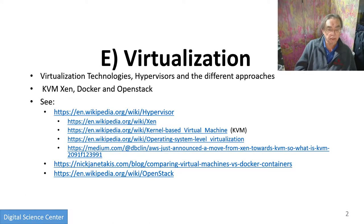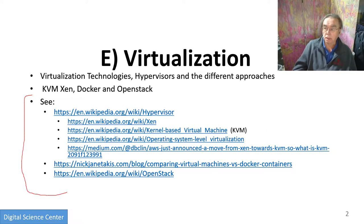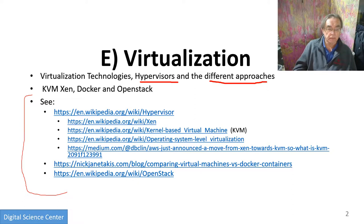Here is an overview, and it also happens to have a bunch of links here which you can look at. You'll notice Wikipedia is pretty strong here. We will go to hypervisors and the different approaches to virtualization, and we'll mention probably the following technologies: KVM, Xen, Docker, and OpenStack.